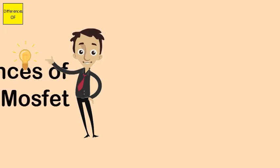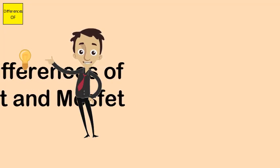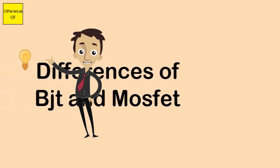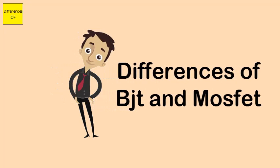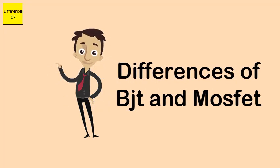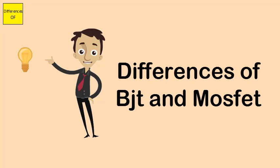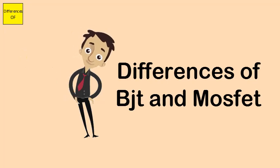Difference between BJT and MOSFET. BJT stands for Bipolar Junction Transistor. MOSFET stands for Metal Oxide Semiconductor Field Effect Transistor.